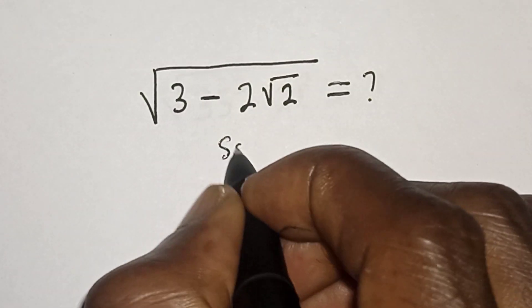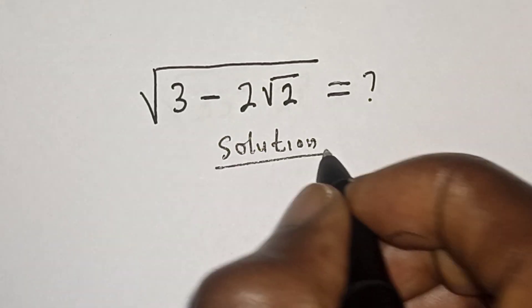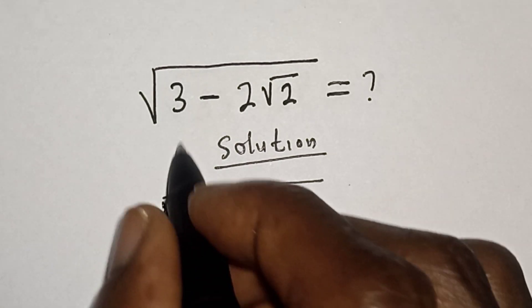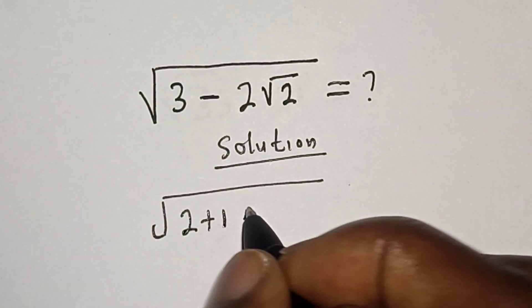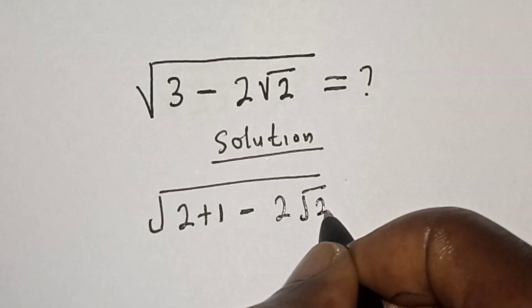Solution: We have square root of 3, which can be written as square root of (2 plus 1) minus 2 root 2.